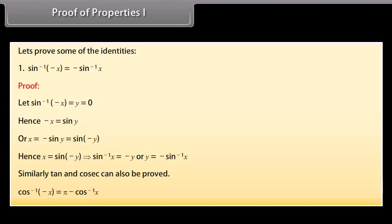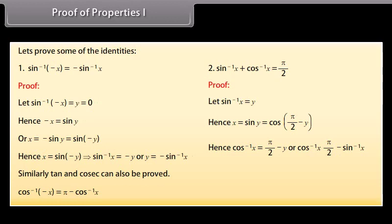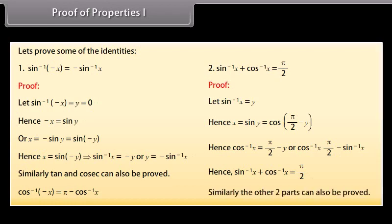Next, prove cos⁻¹(−x) = π − cos⁻¹x, and sin⁻¹x + cos⁻¹x = π/2. Proof: Let sin⁻¹x = y. Hence, x = sin y = cos(π/2 − y). Hence, cos⁻¹x = π/2 − y = π/2 − sin⁻¹x. Therefore, sin⁻¹x + cos⁻¹x = π/2. Similarly, the other two parts can also be proved.